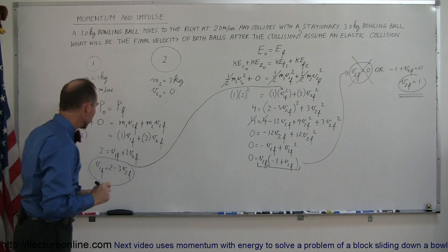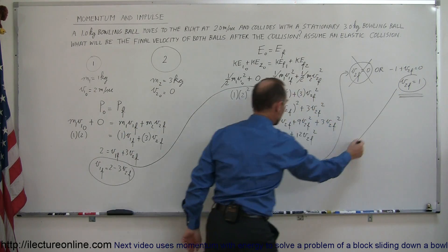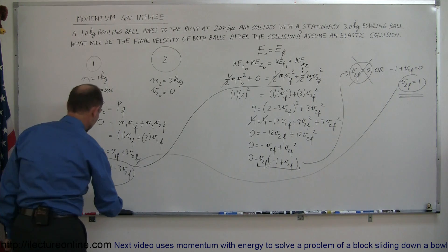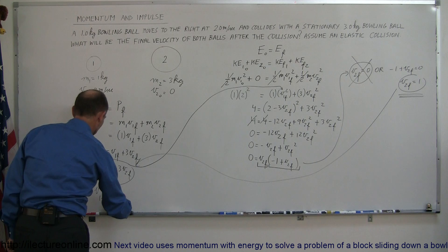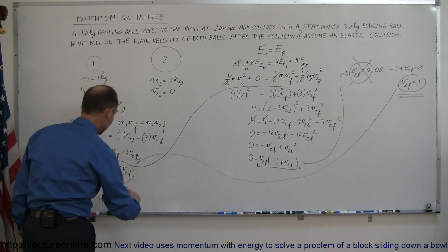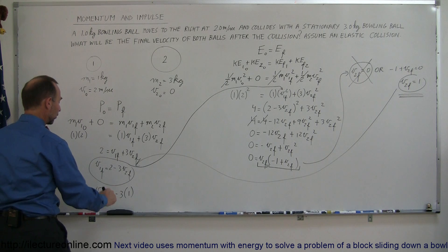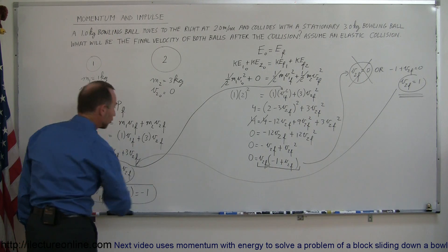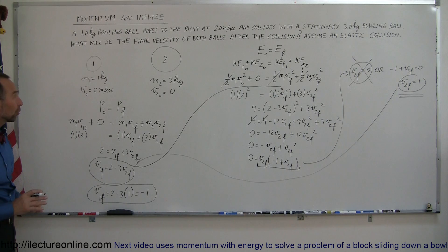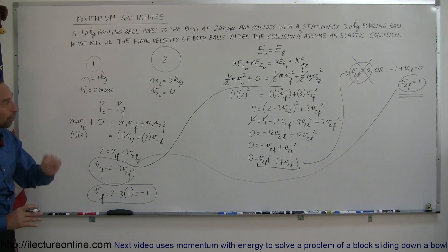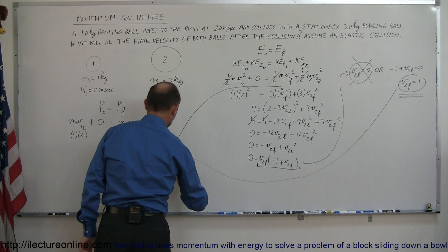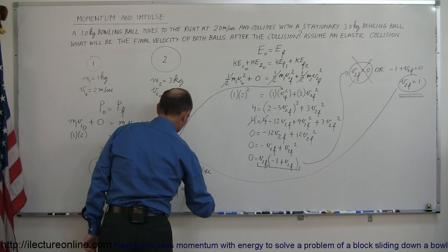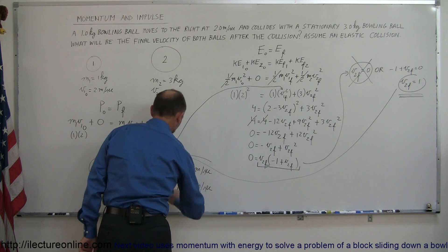With v2 final = 1, we go back and plug into v1 final = 2 − 3×v2 final = 2 − 3×1 = −1 meters per second. So after the collision, v1 final equals −1 meter per second and v2 final equals +1 meter per second. That is the solution to this problem.